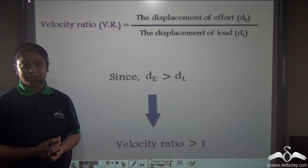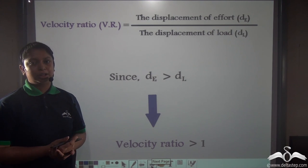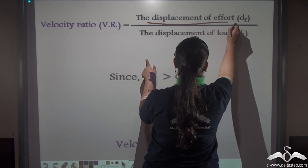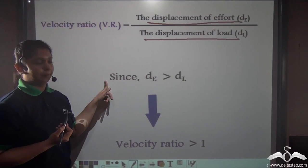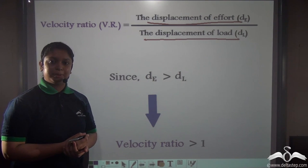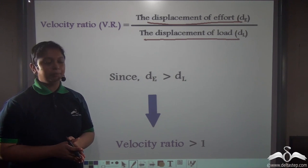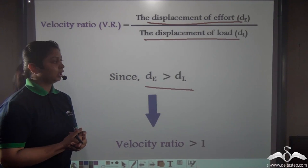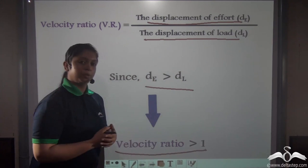What about the velocity ratio? We found that mechanical advantage for class 2 levers is always greater than one. The velocity ratio is the ratio of the displacement of effort (dE) to the displacement of load (dL). Since the effort arm is greater than the load arm, the effort moves a greater distance than the load. So the velocity ratio for class 2 levers is also always greater than one.